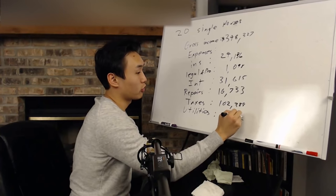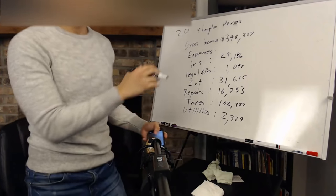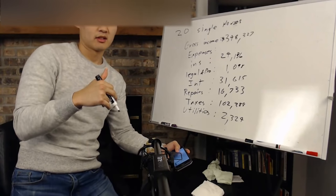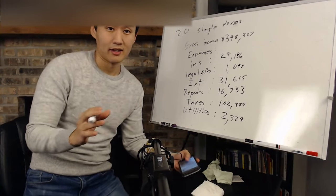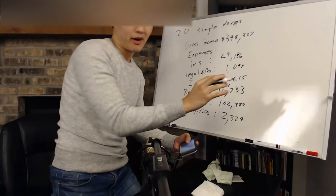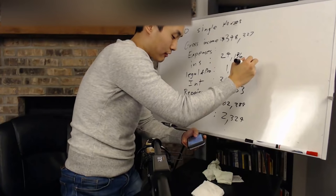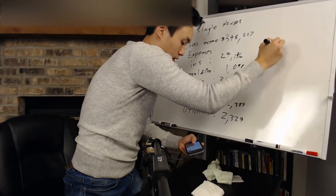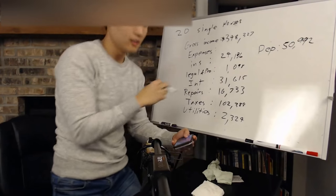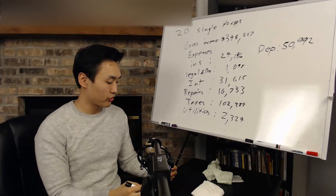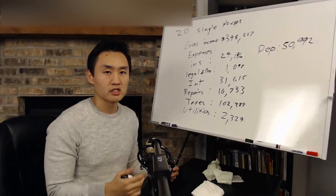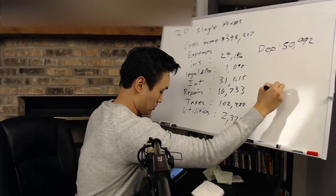Let's move on to utilities. Utilities are $2,324. We also have wages and salary. It was blank. We also have depreciation. Depreciation was $50,992. So if you rack up all the expenses, if you look at line 16, total expenses for the property was $303,372.